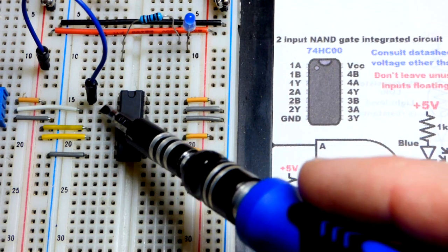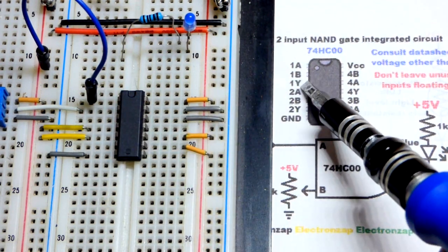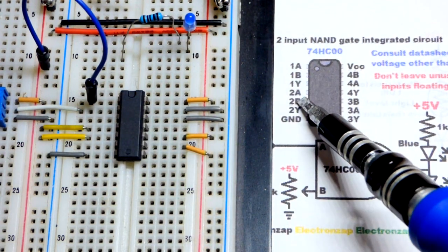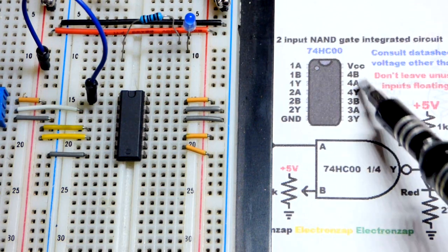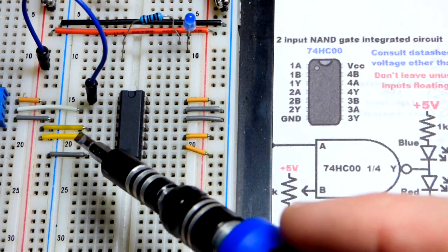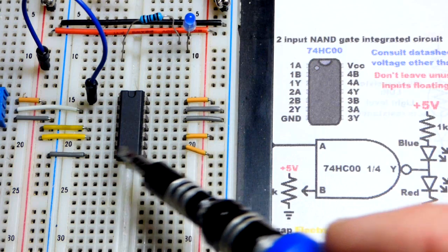And here you can see the actual component there with the pin layout. We're using A on top there, B right below it. We'll come to that. And then the output is right below that. The inputs that we are not using there, we have tied directly to a supply rail. The outputs we can leave floating. That is not a problem at all.